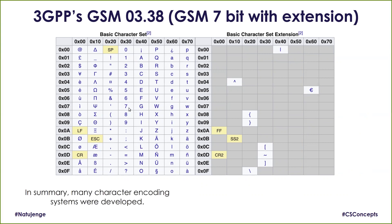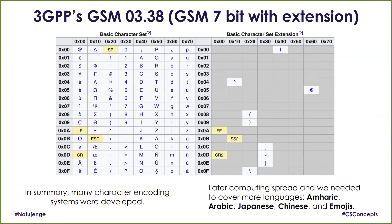In summary, many character encoding systems were developed, which led to the need for a standard. Computing spread from Europe to other parts of the world, and we needed to cater for Amharic in Ethiopia, Arabic, Japanese, Chinese, and even today, emojis. This presented an opportunity to come up with a solution that covers all.